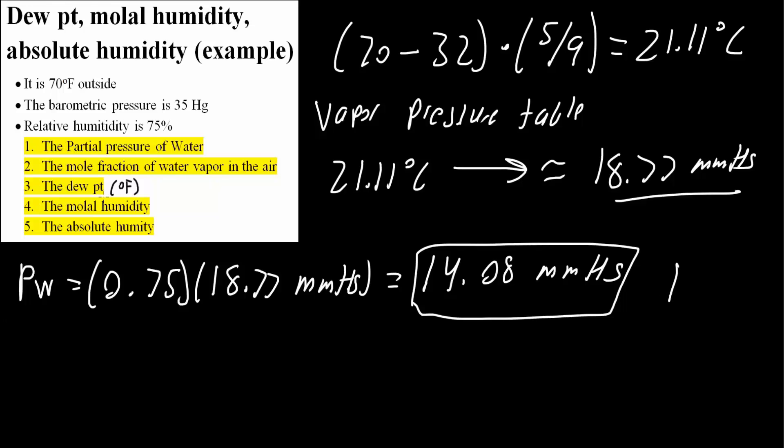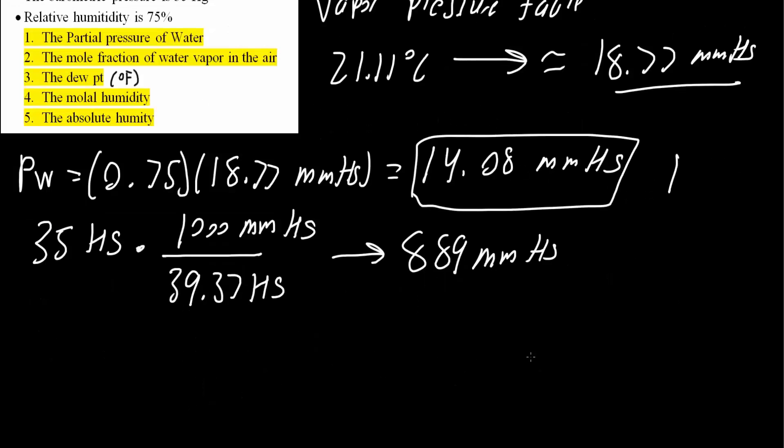Next, we will calculate the mole fraction of water in the air. We need to convert 35 Hg into milligrams of mercury. We do this by multiplying 35 Hg by our conversion factor: 39.37 Hg equals 1,000 mg of mercury. So this equals 889 mg of mercury.